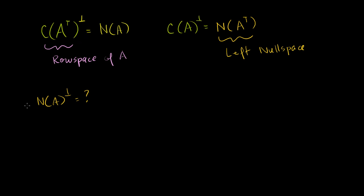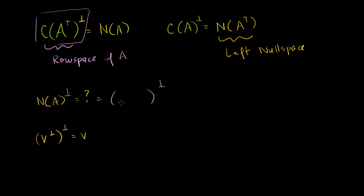In the last video, we saw that if we take the orthogonal complement of the orthogonal complement, it equals the original subspace. So now, we're taking the orthogonal complement of the null space of A. Well, the null space of A is just the row space's orthogonal complement. We're essentially taking the orthogonal complement of the orthogonal complement. Using this property we just proved in the last video, this is equal to just the row space of A, which is the same thing as the column space of A transpose.